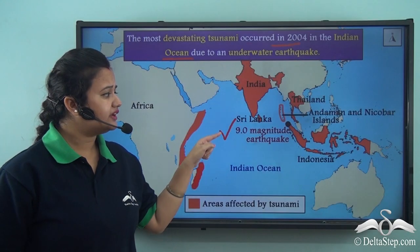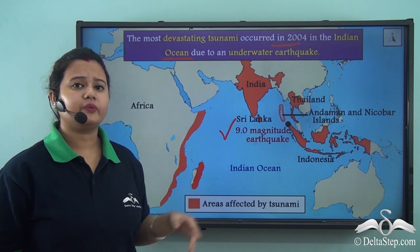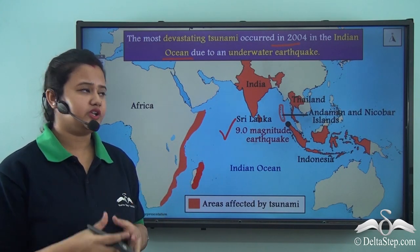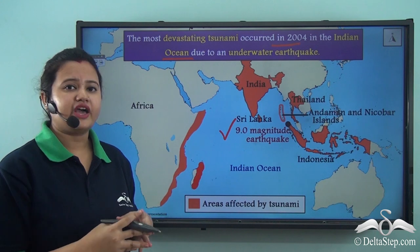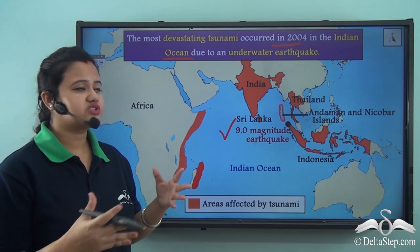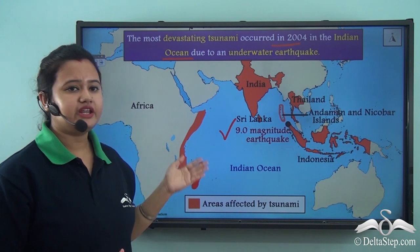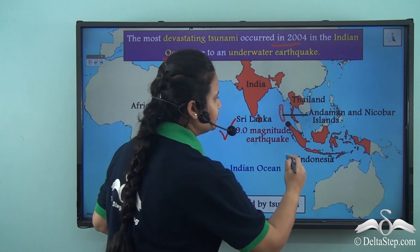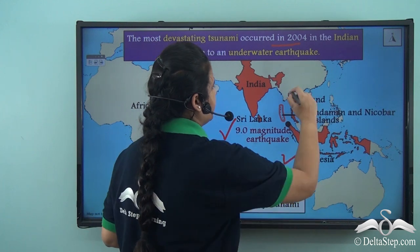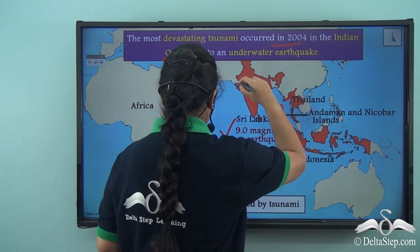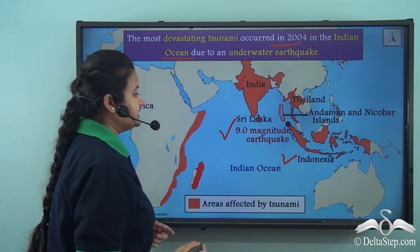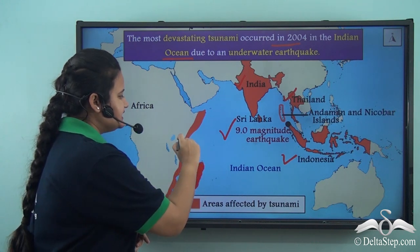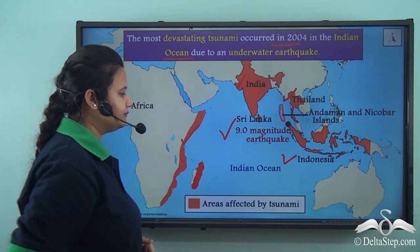Due to this underwater earthquake, huge waves were produced which crashed on the coastal regions of the adjoining countries like Indonesia, Thailand, India, and even the faraway countries of East Africa.